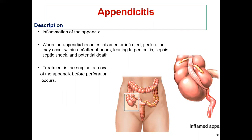When the appendix becomes inflamed or infected, perforation may occur within a matter of hours, leading to peritonitis — inflammation of the peritoneum — and all of this can lead to sepsis, septic shock, and potentially death. Treatment is surgical removal of the appendix before perforation occurs.